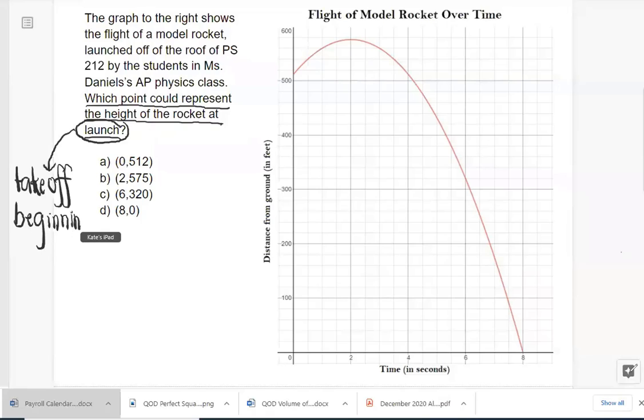So a lot of students would want to go straight to what's called the vertex or the kind of extreme point of this graph and go to here. But that's not the point at launch. That's the highest point that the model rocket reaches before it starts falling from the sky, basically. So then how can I tell the point, the height at launch?